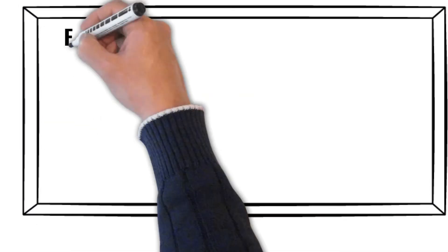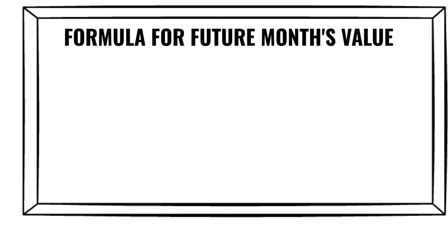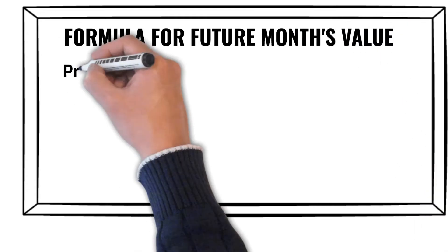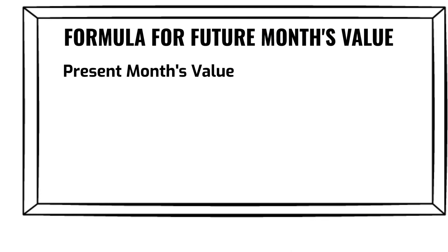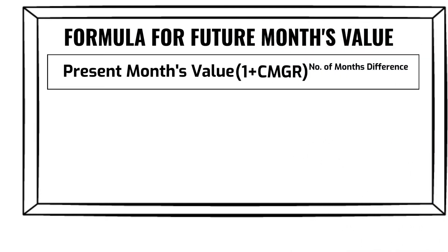Have a look. We will use the following formula to project the visitors in any future month: Future month's value equals present month's value multiplied by 1 plus CMGR to the power of number of months difference.